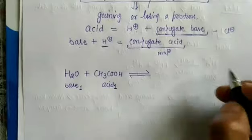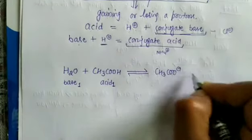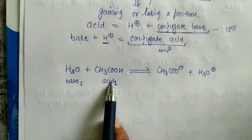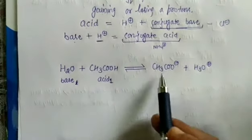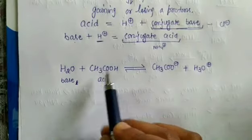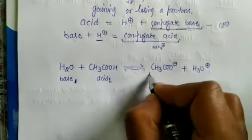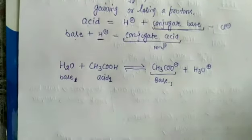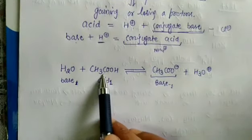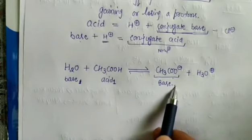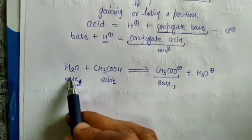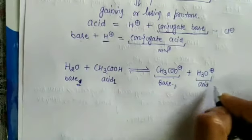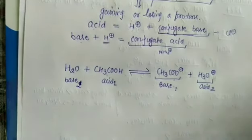When water reacts with an acid (HA), the acid gives a proton and water accepts it, producing hydronium ion (H₃O⁺) and the conjugate base (A⁻). The acid HA is labeled acid 1; water, which accepts the proton, is base 1. The resulting A⁻ is the conjugate base of acid 1, and hydronium ion is the conjugate acid of water (base 1). This is how we label conjugate acid-base pairs.